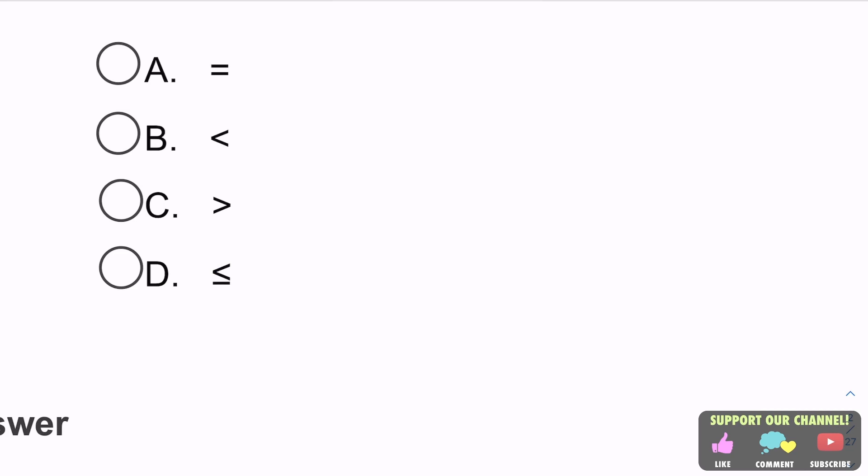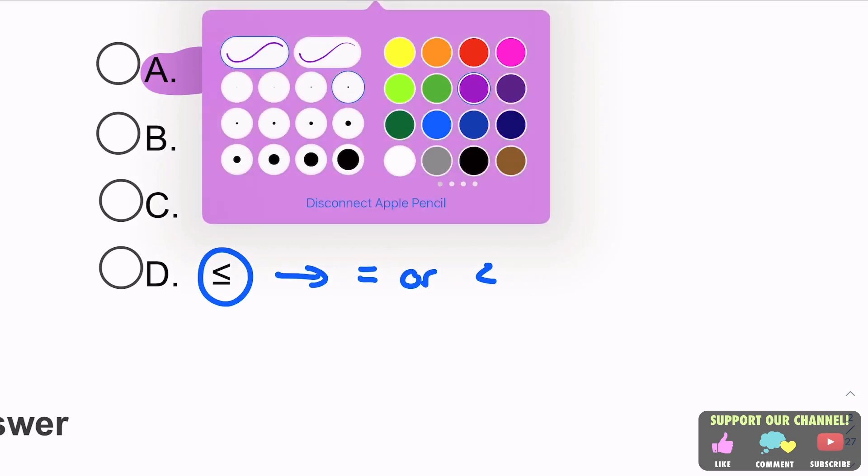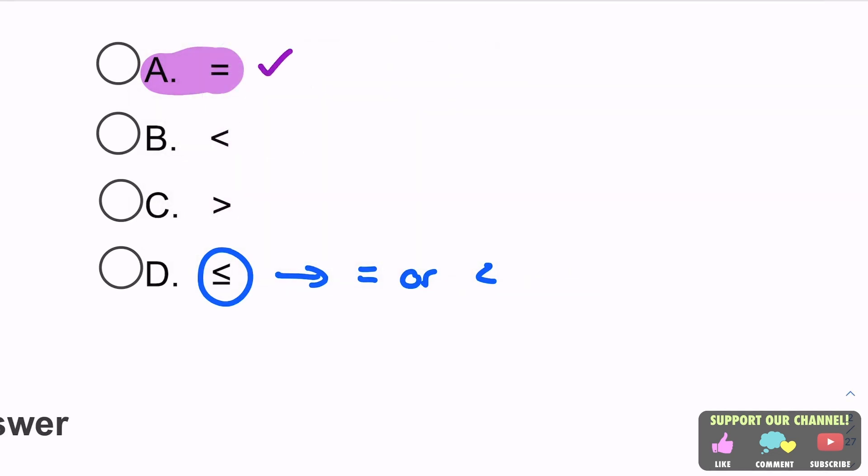Hopefully we understand that less than or equal to means it's equal to or less than. And so, with that said, think about it like this. If A was the answer, equal to, what could potentially also be an answer? Well, D could also potentially be an answer because, again, less than or equal to means less than or equal to. So one or the other is true. And so, if A was the answer, that would mean D would have to be an answer.